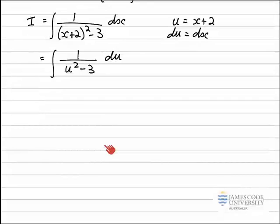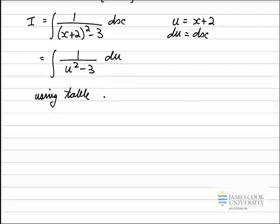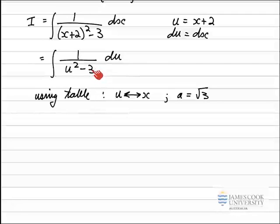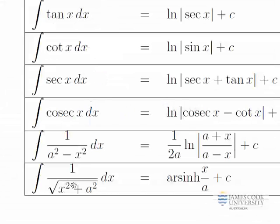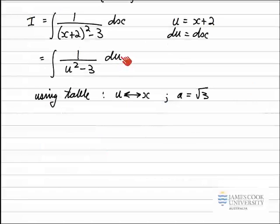So going back to my question here, I'll note that I'm going to use the table. I'm going to replace u with x to match what's on the table, just using the fact that the table is in terms of x and I'm in terms of u. I'm going to let a equal the square root of 3. In the standard integral I've got a squared, so that's 3. I need to let a equal root 3 so that a squared equals 3. Also note that on the table we've got the constants first — a squared minus x squared — whereas in my example with variable u, I've got the variable first: u squared minus 3.